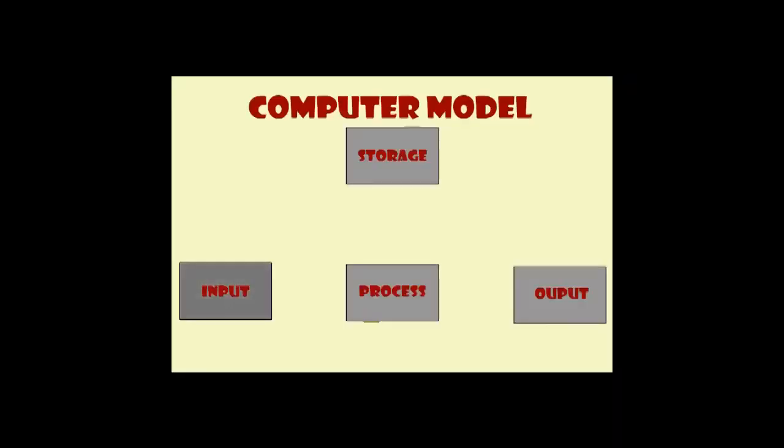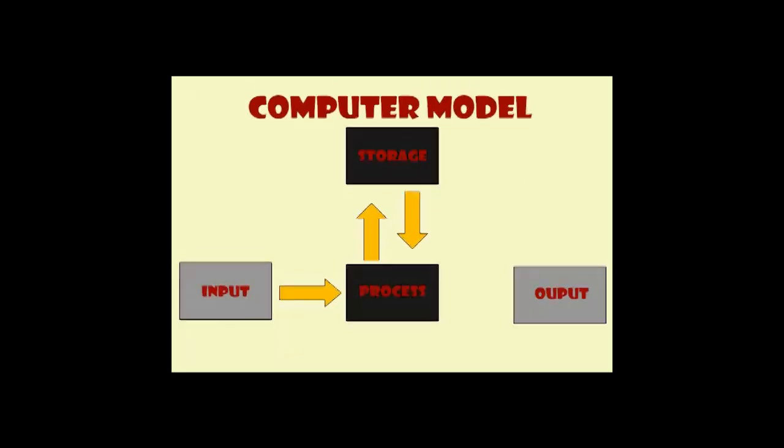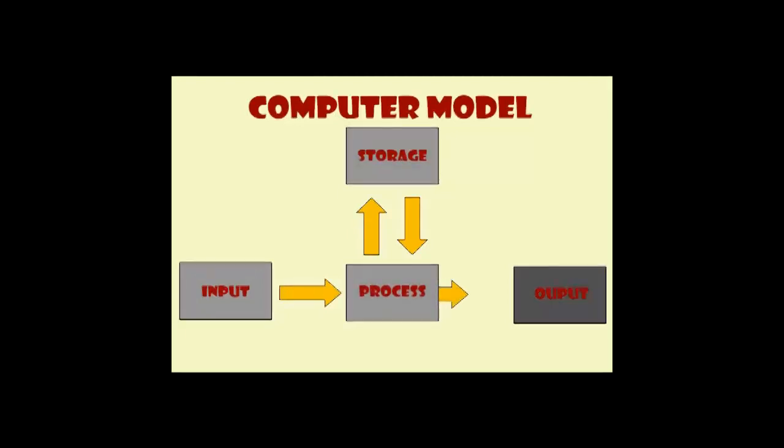When data is entered into the computer system, it is called input. The central processing unit, CPU, processes the raw data given as input into meaningful information. This information is then stored. Storage is a location in which data, instructions and information are held for future use. The final outcome is given as output to the user.